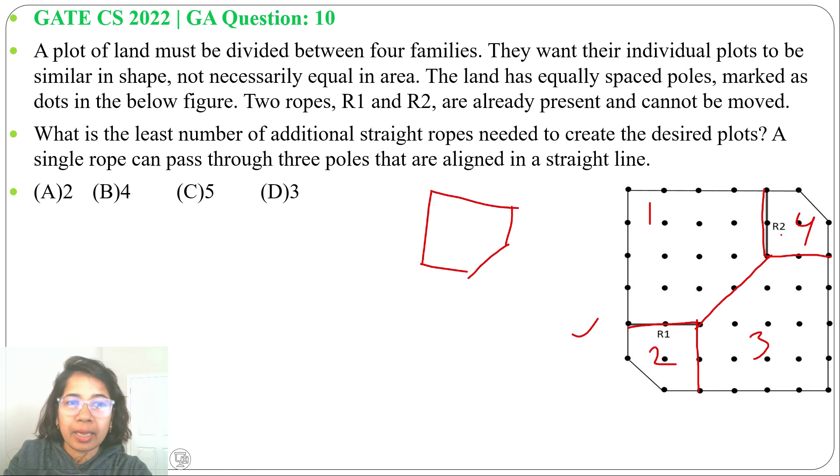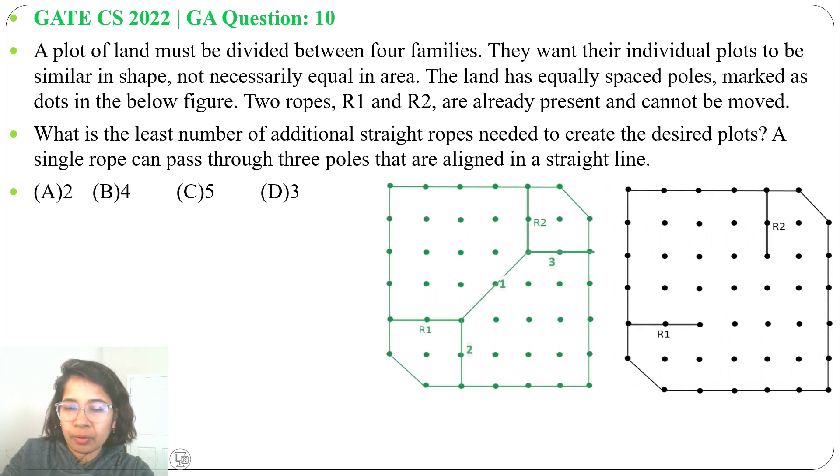2 and 4 are in equal area. 1 and 3 are in equal area. But 1, 2, 3, 4 all are in equal shape. So we need 3 extra ropes. 1, 2, 3 to divide into 4 plots.